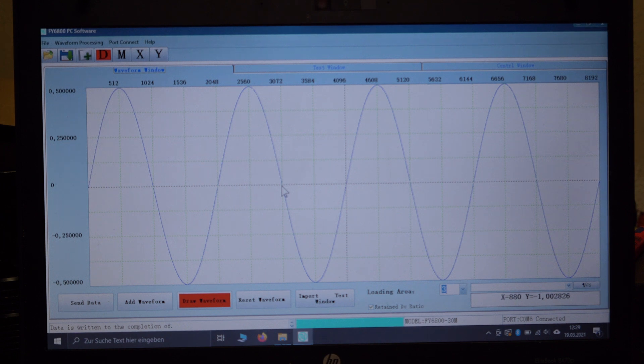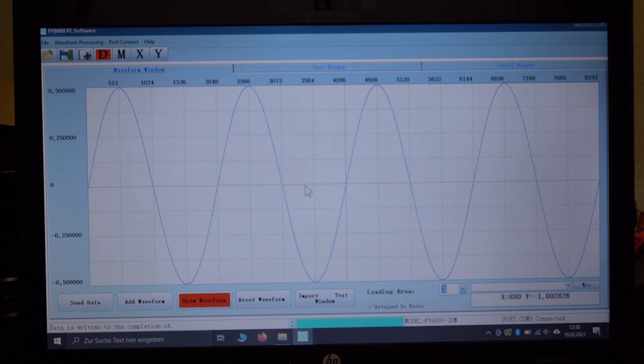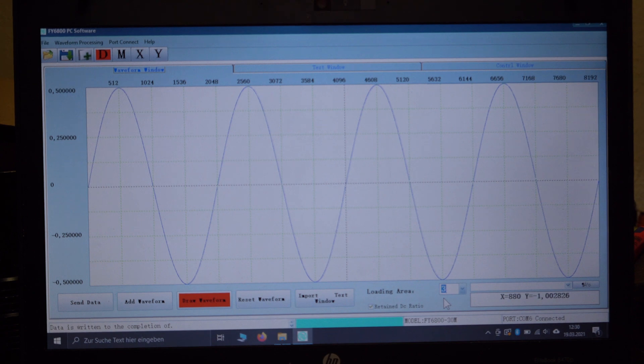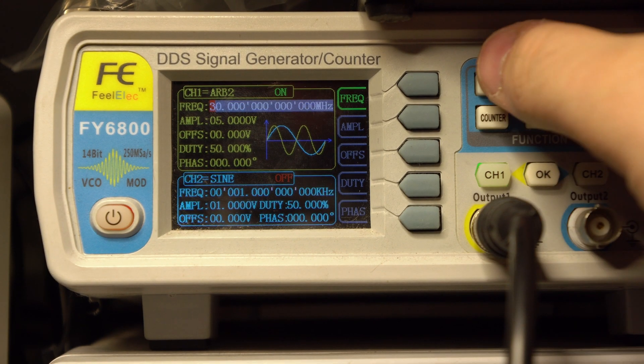You can also enter your own waveforms via text window in minus one to one values. You just have to enter 8192 values - you can for example write a program that does this for you. But I uploaded the new waveform at slot three, so let's go back to the signal generator.